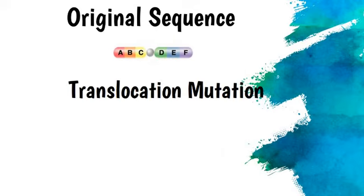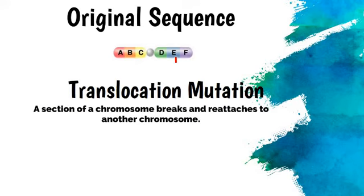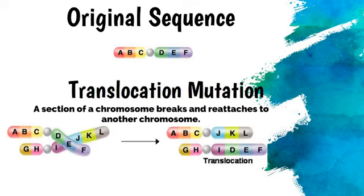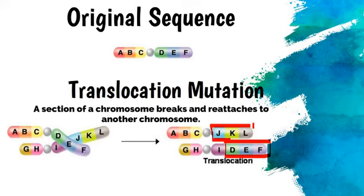Another possibility that can happen is something called a translocation mutation, and this is a much bigger break. Instead of just having one chromosome with a sequence A, B, C, D, E, F, you have two chromosomes present. One section is going to break off, swap, and reattach on the other chromosome. So our translocation has transplanted a section from one chromosome, substituting it in place on the other. We have a change to both the length of the DNA potentially and also the sequence.